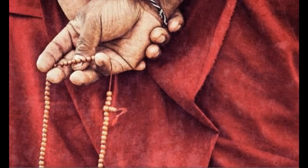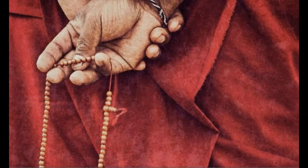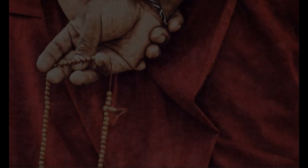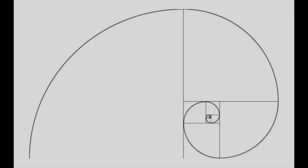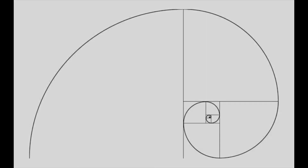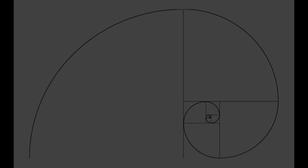This mantra is usually chanted 108 times to preserve life. It explains that just like how a cucumber falls from the mother plant, life goes on. All of the examples given above have something in common — all of them are arranged in the Fibonacci pattern.